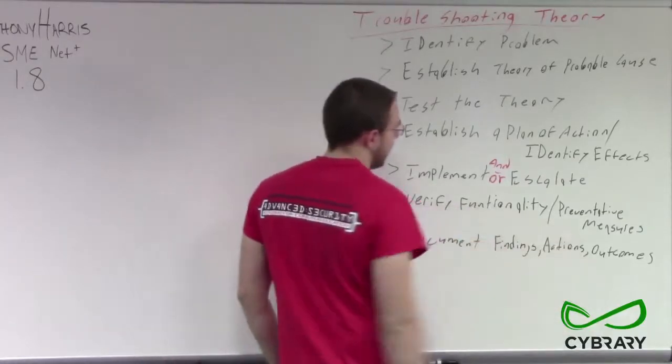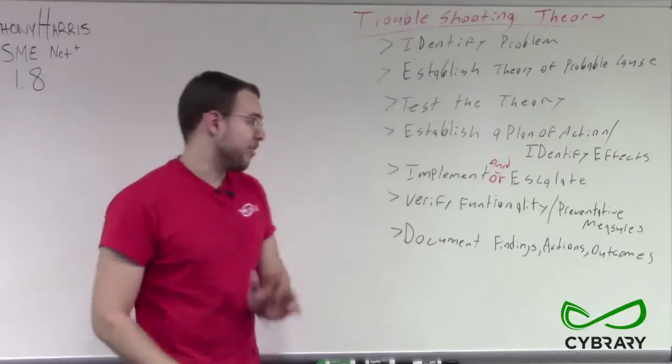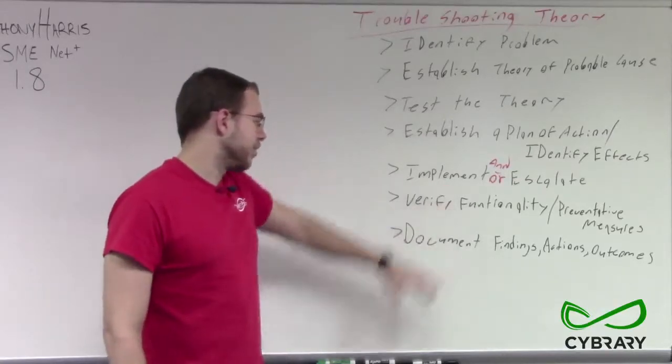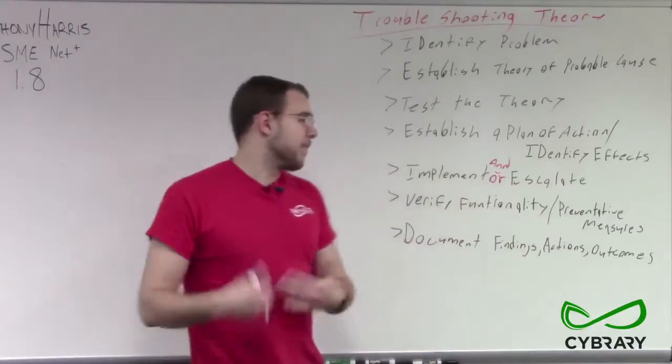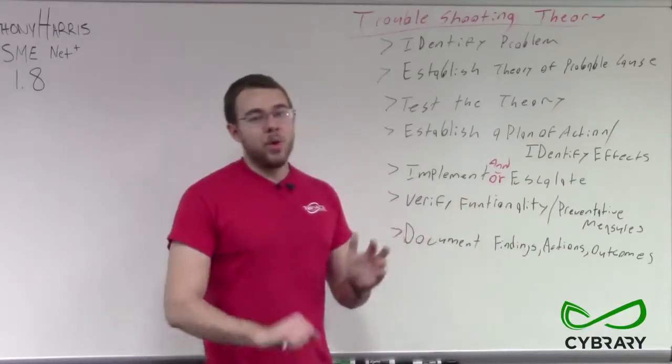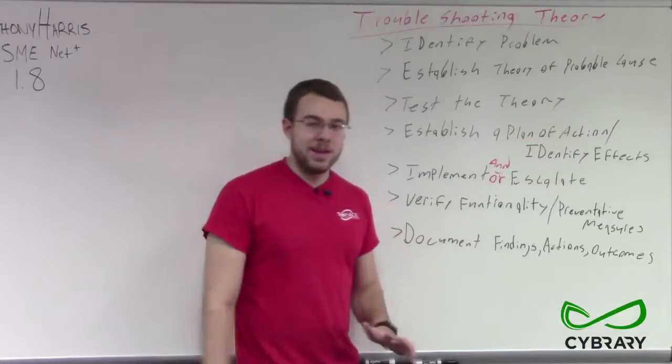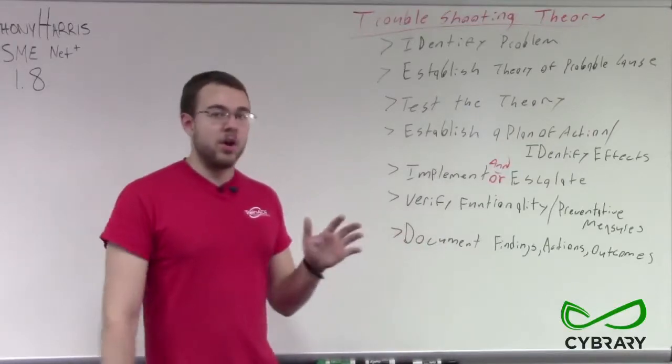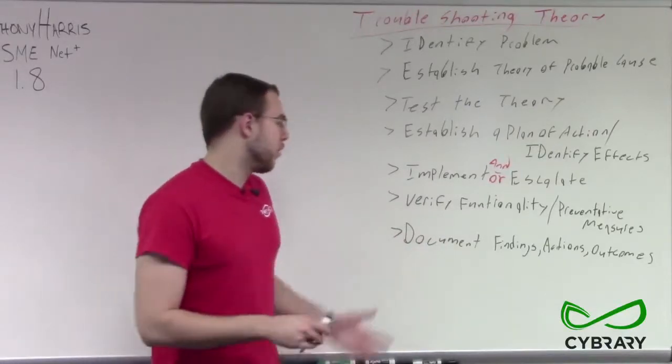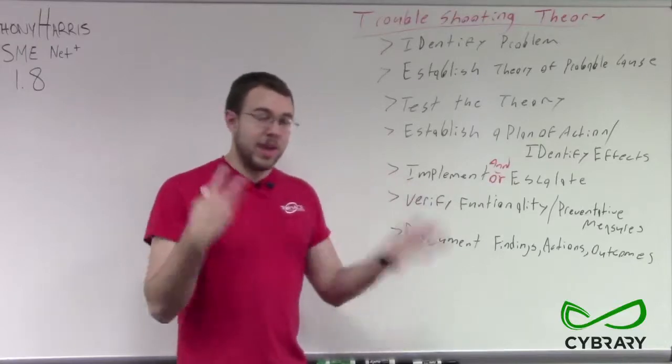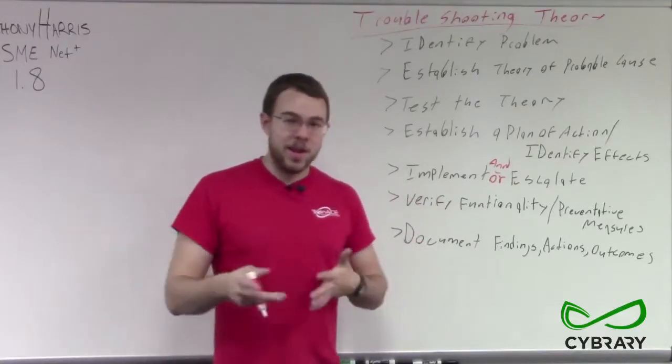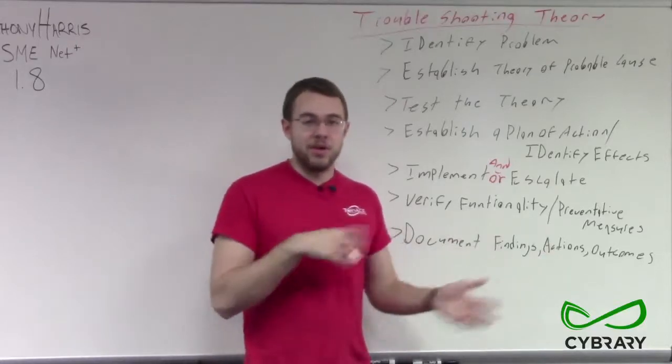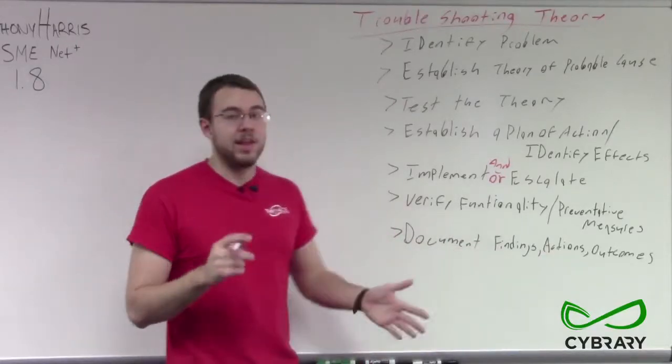Then we verify functionality and take preventative measures. After we've implemented our solution or escalated our issue and they've implemented their solution, we need to go back and verify functionality. So our jabbering computer has come back from maintenance or we replaced the network interface card and we're not having our issue anymore. We connect it back to the network and the network's still fine. We let that computer go out to the internet, start navigating some pages, try to download files from our file server and everything's good. So we're verifying functionality.